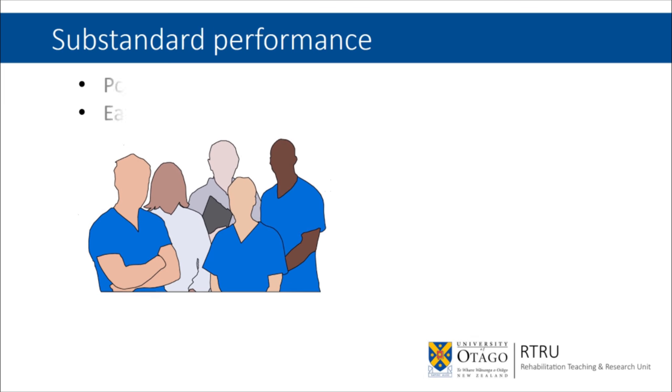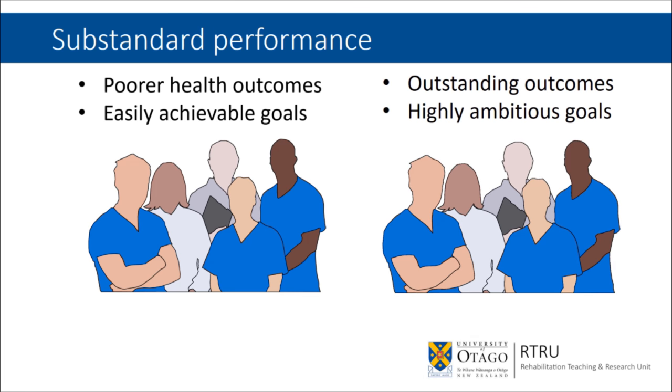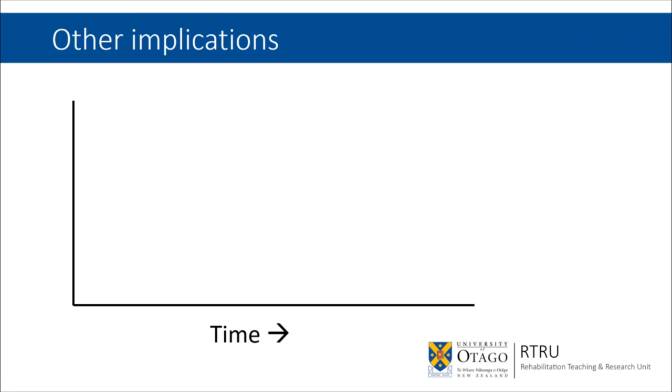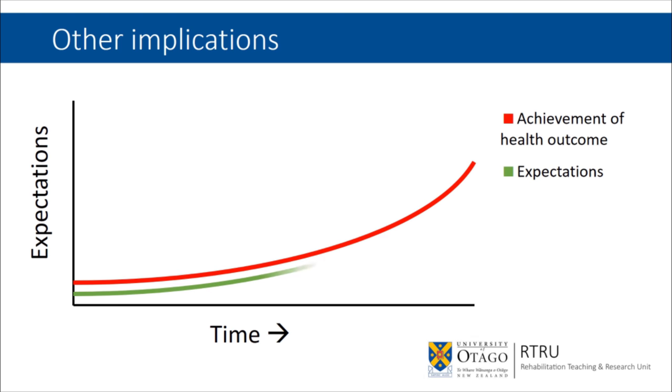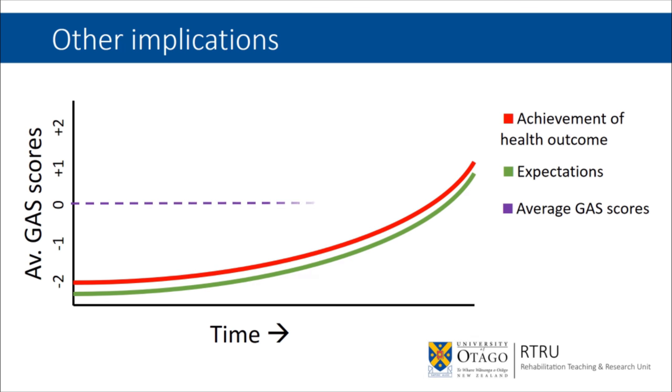GAS scores cannot distinguish between substandard therapy oriented towards easily achievable goals, and extremely high standards of therapy with very ambitious goals. There are other implications arising from this. For instance, as a rehabilitation team develops an expertise, so too should its expectations for patient outcomes. As such, even if a rehabilitation team improves the quality of its service delivery, its average GAS score ought to remain a steady zero. GAS scores, therefore, cannot be used to meaningfully benchmark performance between two services, nor within one rehabilitation service, over time.